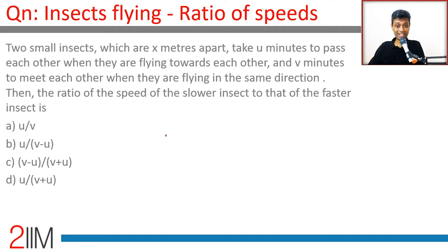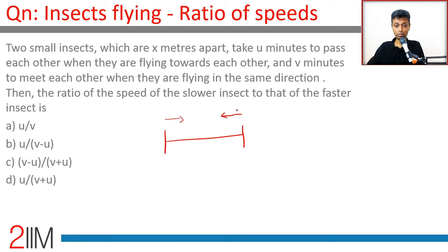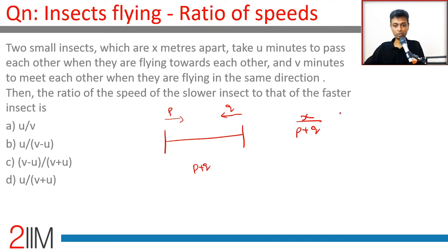Two small insects which are x meters apart take u minutes to pass each other when they are flying towards each other. Let's say this one travels at speed p and this one travels at speed q. Traveling towards each other, relative speed is p plus q. Distance by relative speed: x divided by p plus q equals u.